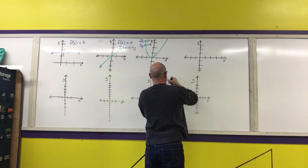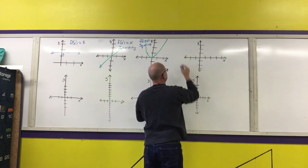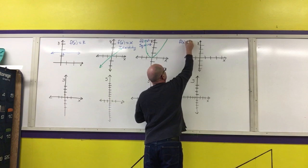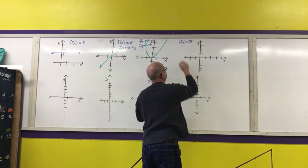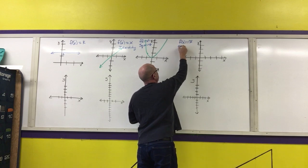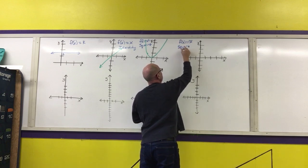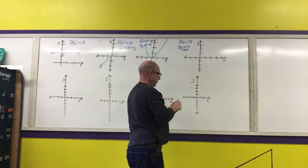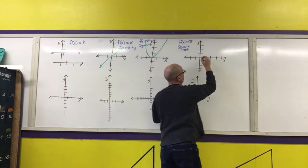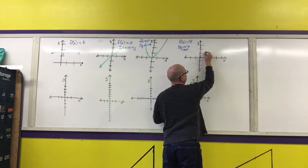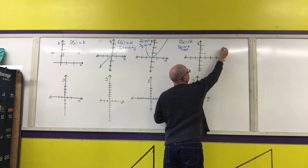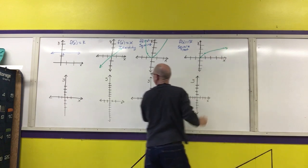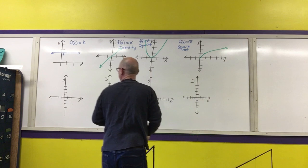Next we have f(x) = √x, called the square root function. The graph starts at zero; the square root of 1 is 1, the square root of 4 is 2, and it continues forever to the right.